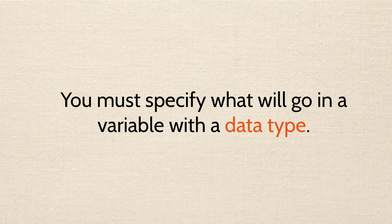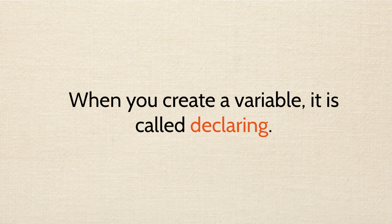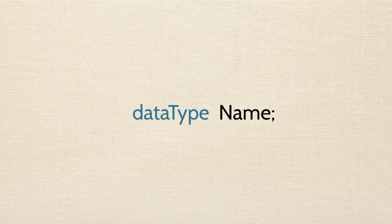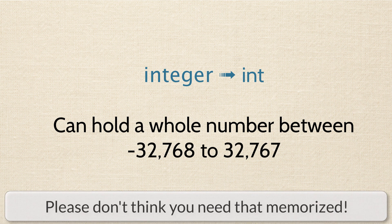Variables are kind of like this because a variable has to have a data type specified. So if I have a variable and I say it can only hold whole numbers, then I can put whole numbers in that variable all day long. But if I try to put a fraction into that variable, I'm going to get an error — because I specified the data type for that variable to hold whole numbers. Creating a variable is called declaring it. To declare a variable, you need two things: a name and a data type. The data type comes first, followed by the name. One example of a common data type is an integer.